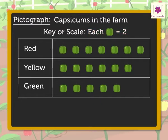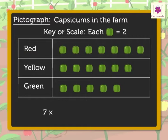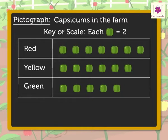So, let us count the number of capsicums in the farm. There are seven red capsicum pictures. That means, seven multiplied by two is equal to fourteen red capsicums. Accordingly, we can find out the yellow and green capsicums.